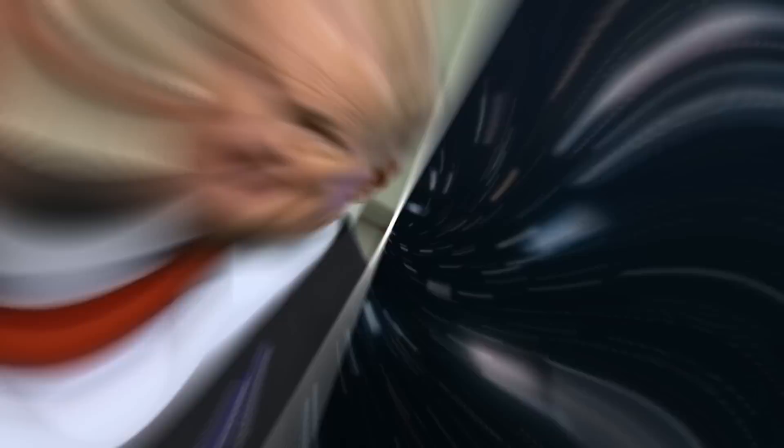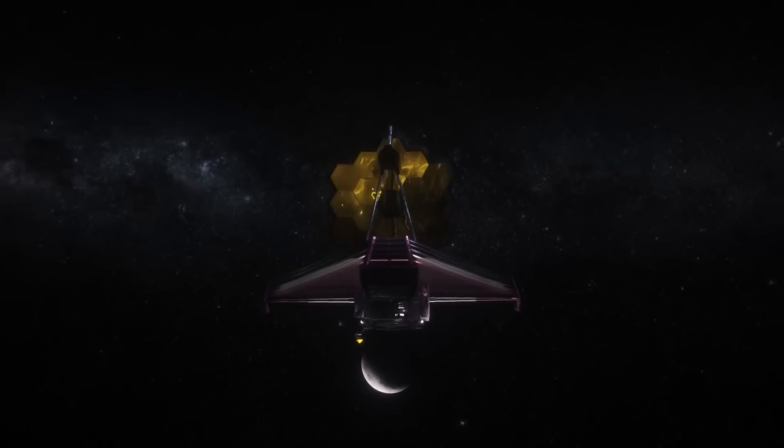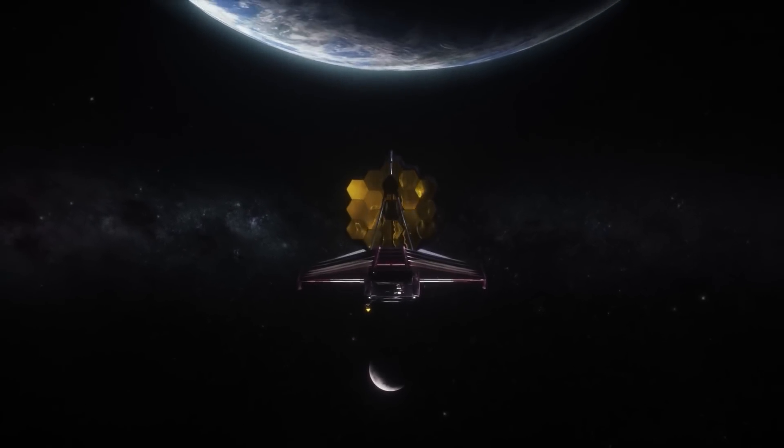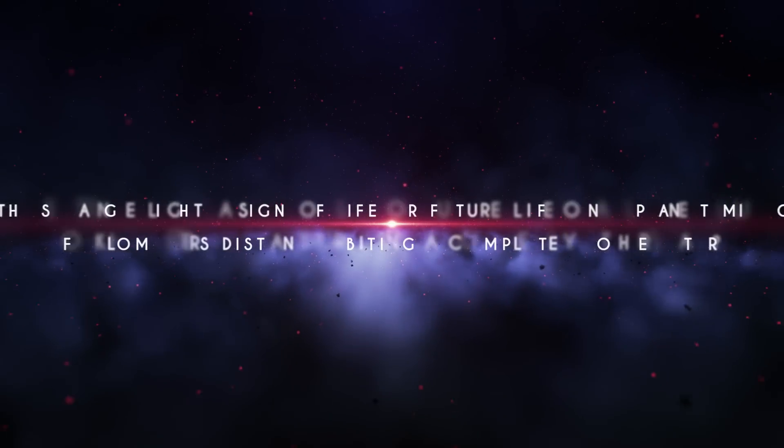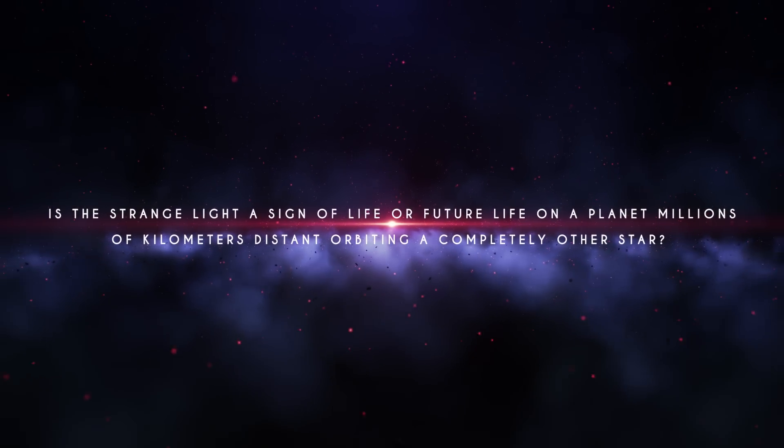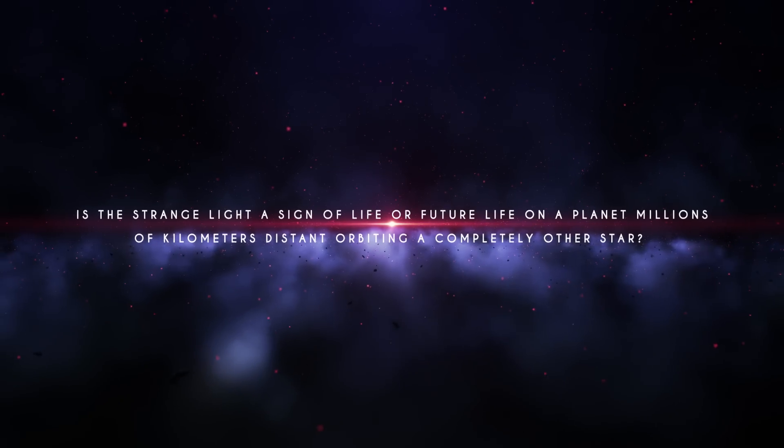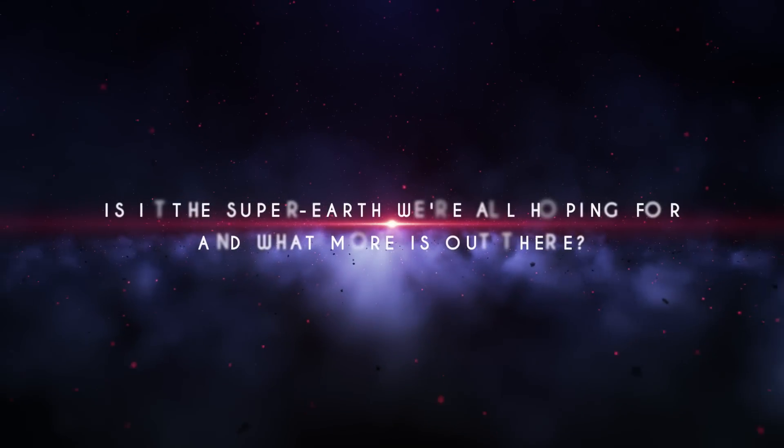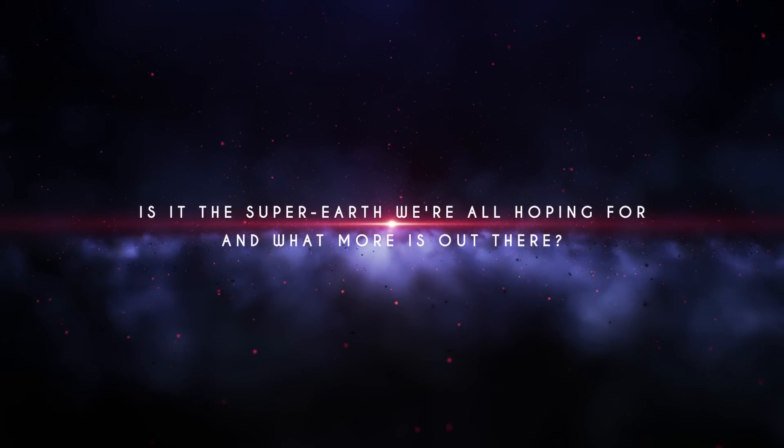NASA Administrator Bill Nelson has vowed that humanity will soon have a completely unique picture of the cosmos unlike anything we've ever seen before. Today we'll look at the data provided by the James Webb Space Telescope and discuss what it means. Is the strange light a sign of life or future life on a planet millions of kilometers distant orbiting a completely other star? Is it the super-Earth we're all waiting for and what more is out there?